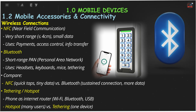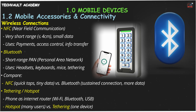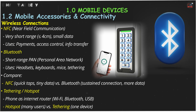Bluetooth is your go-to for a personal area network, or PAN. It connects devices over a short distance, but a bit further than NFC, and handles more data. Think wireless headsets, keyboards, mice, or even tethering your phone for internet. Comparing these, NFC is for quick tiny data swaps at close range, while Bluetooth is for more sustained connections with peripherals at a slightly longer range.